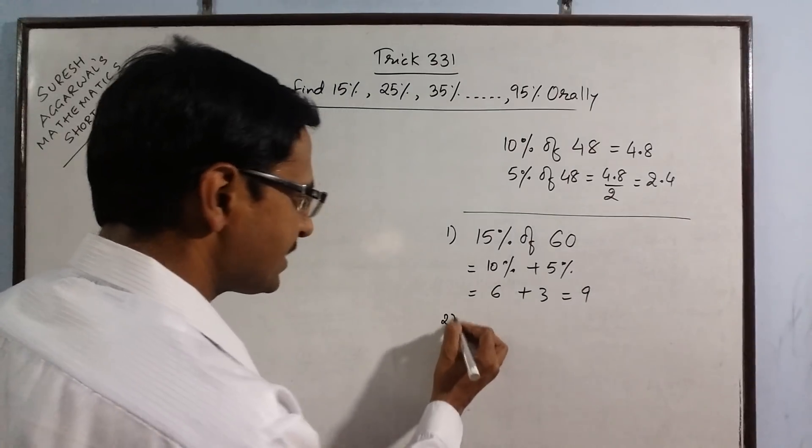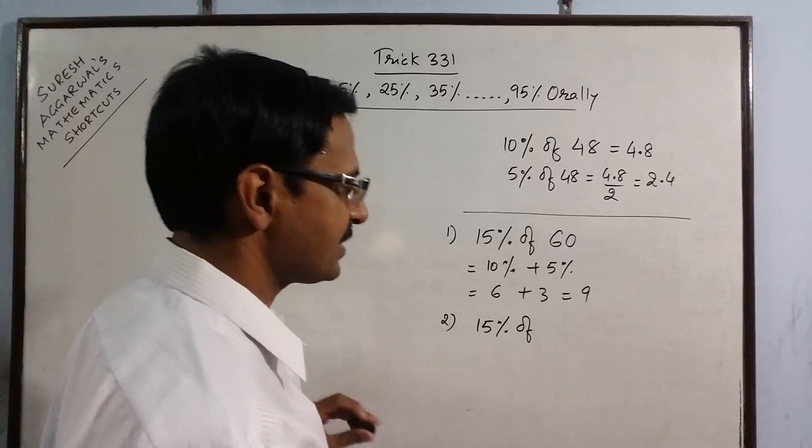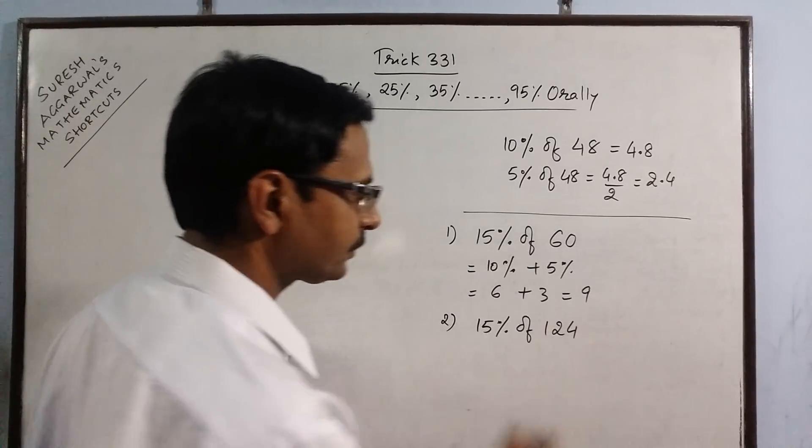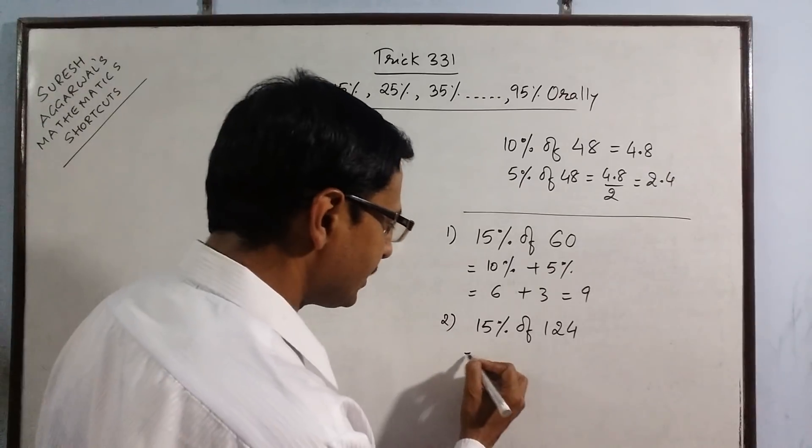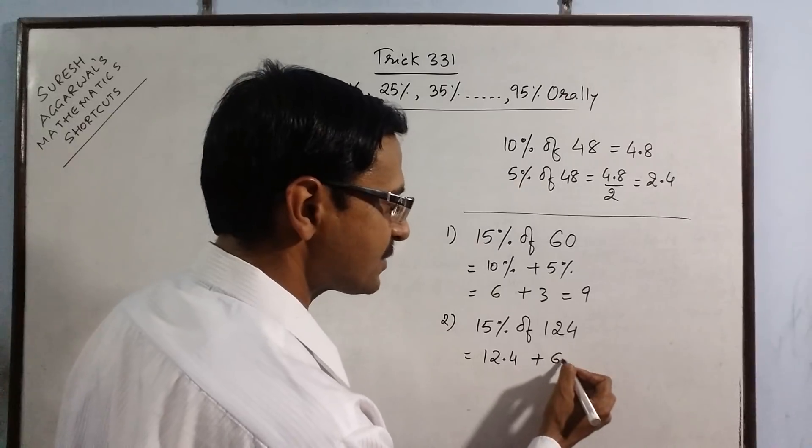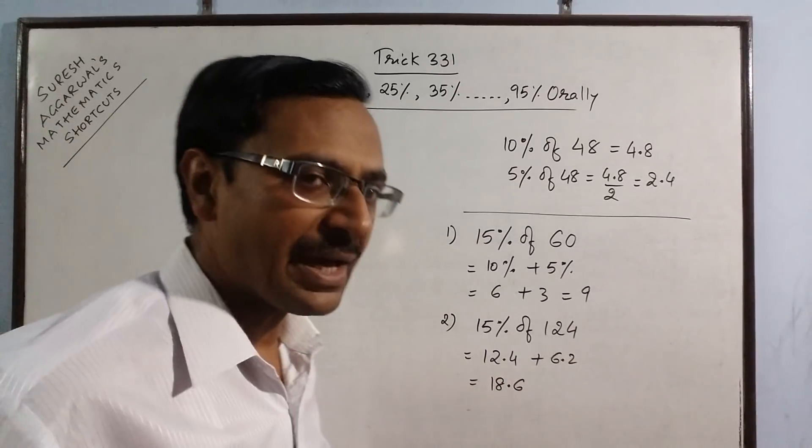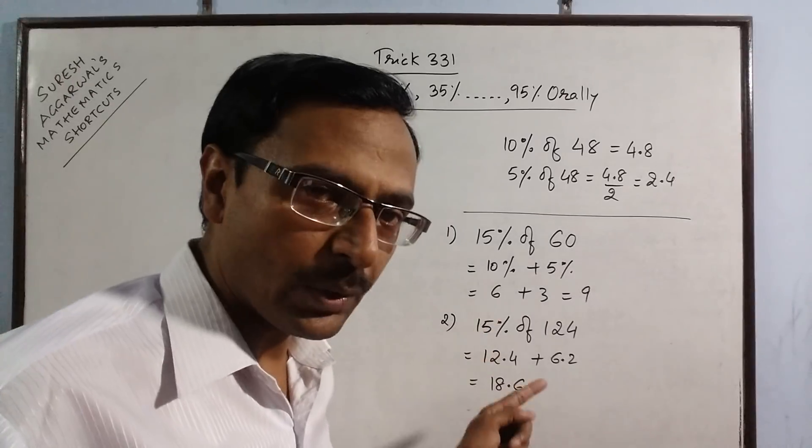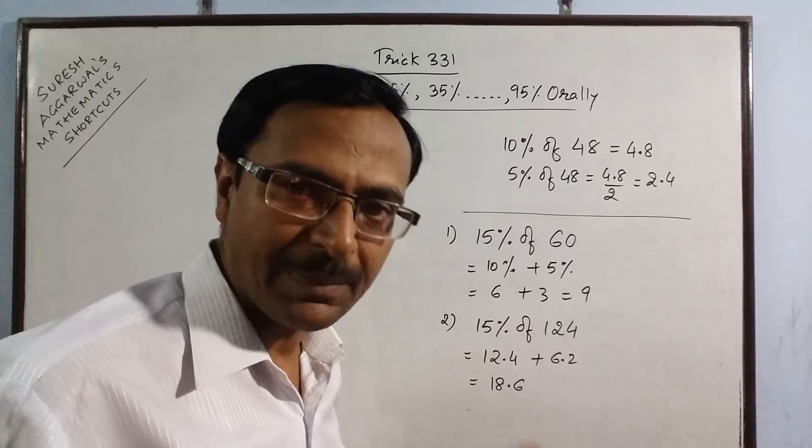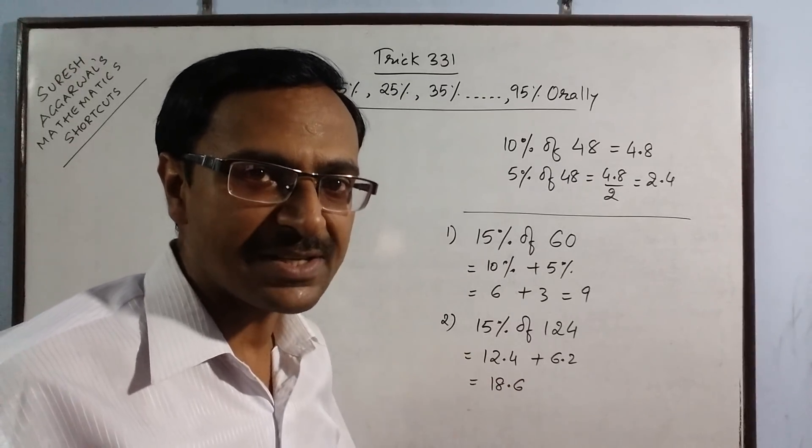Let us take more examples. Say we have this time 15% of 124. Now see 10%? 12.4 and what is half of 12.4? This is 6.2 and add that to get 18.6 as 15% of 124. I am sure the traditional method will consume lot of time, so with this method you will be able to solve this within 2 to 3 seconds time only.